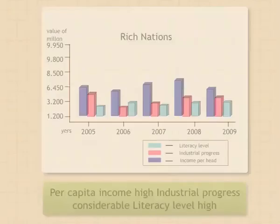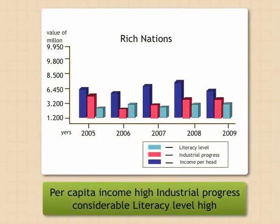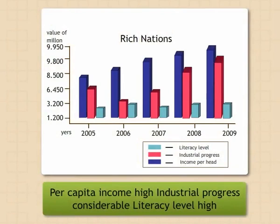A country where the per capita income — that is, income per head — is high, whose industrial progress is considerable, and where the literacy level is also high, such nations are called rich nations. Rich nations enjoy a high standing on the human development index.